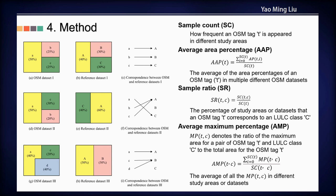The first measure is sample count, which denotes how frequently an OSM tag appears in different study areas. The second is average area percentage, which denotes the average of the area percentages of an OSM tag across multiple OSM datasets. The third is sample ratio, which denotes the percentage of study areas in which an OSM tag corresponds to a specific reference class.